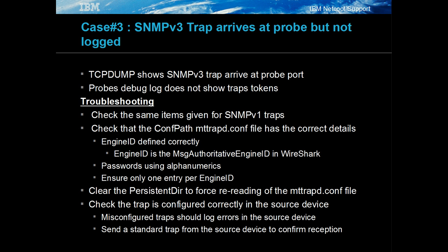SNMP V3 traps and informs are the most troublesome to determine the cause of event loss. This is because the data is encrypted in the PCAP file and the use of engine IDs, users and passwords complicate trap reception. Always ensure that the mtrapd.conf file is configured correctly and that the expected probe properties are being used before entering into any detailed analysis.